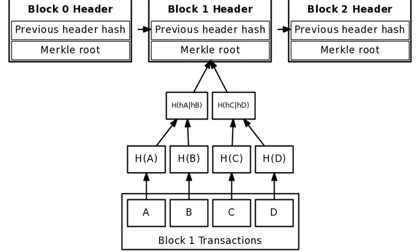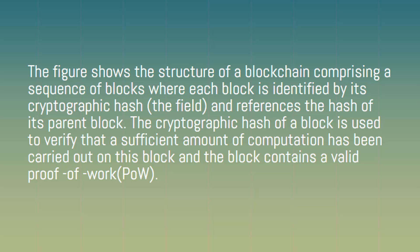The figure shows the structure of a blockchain comprising a sequence of blocks, where each block is identified by its cryptographic hash. Each block references the hash of its parent block. The cryptographic hash of a block is used to verify that a sufficient amount of computation has been carried out on this block.